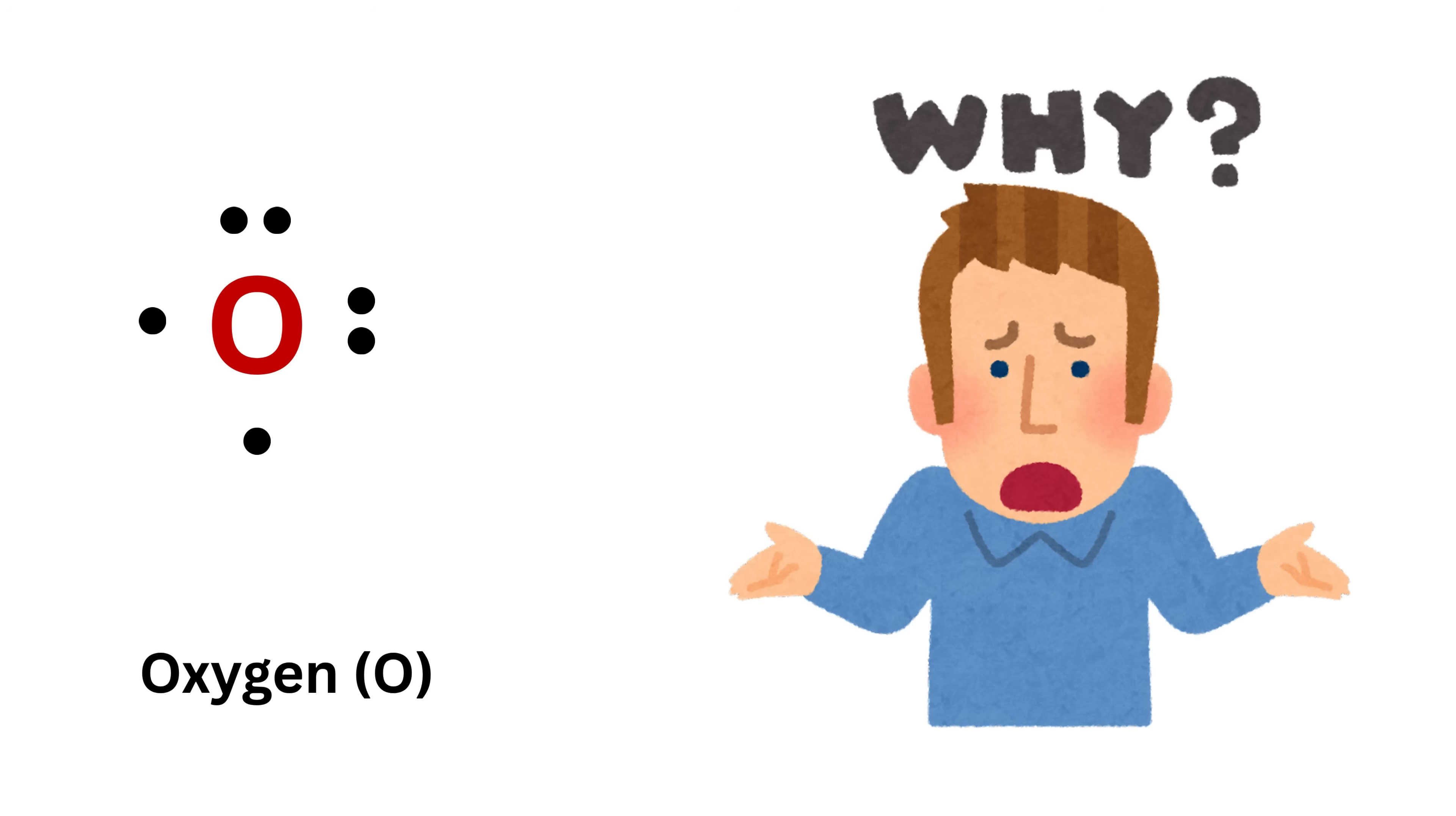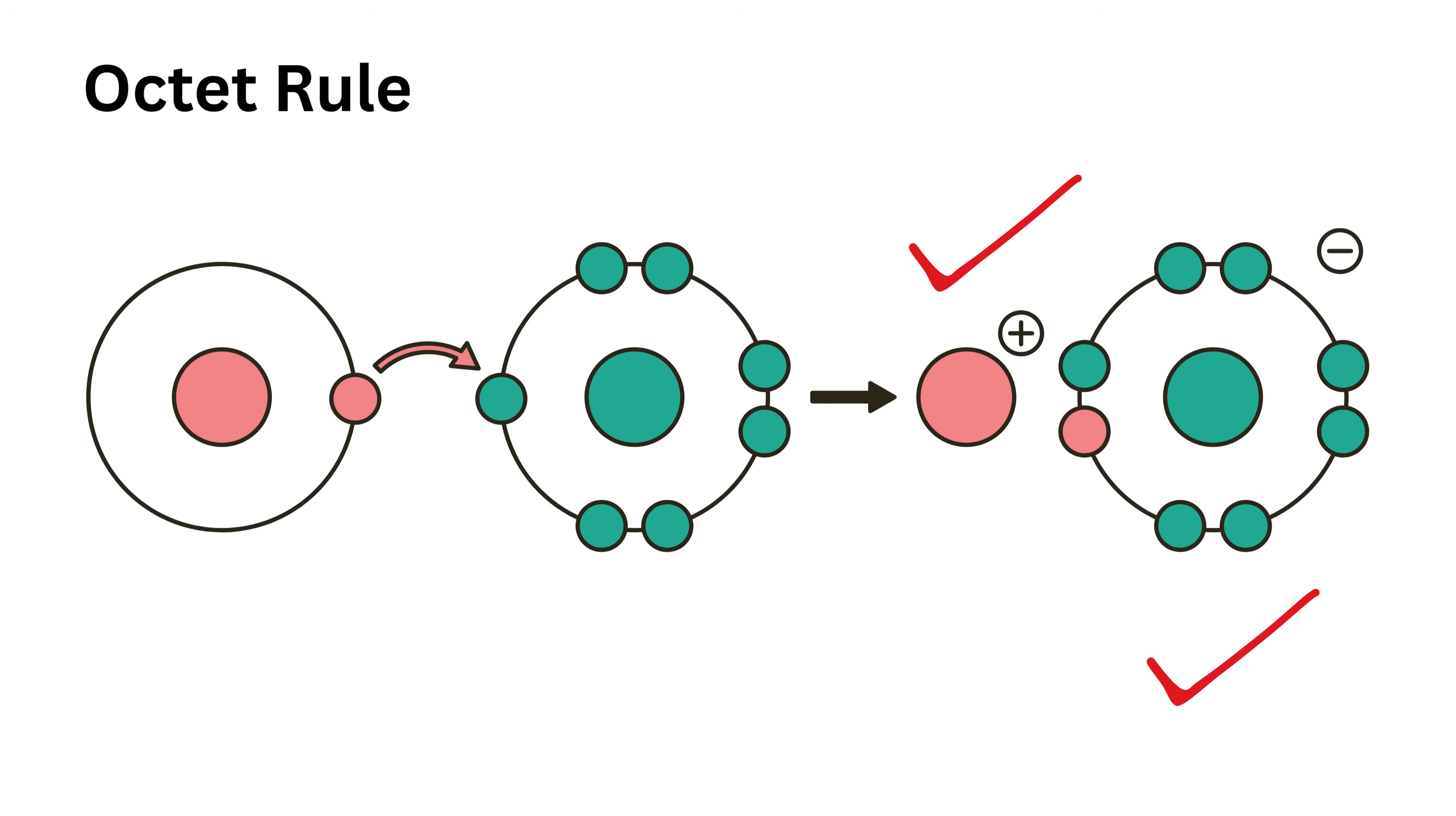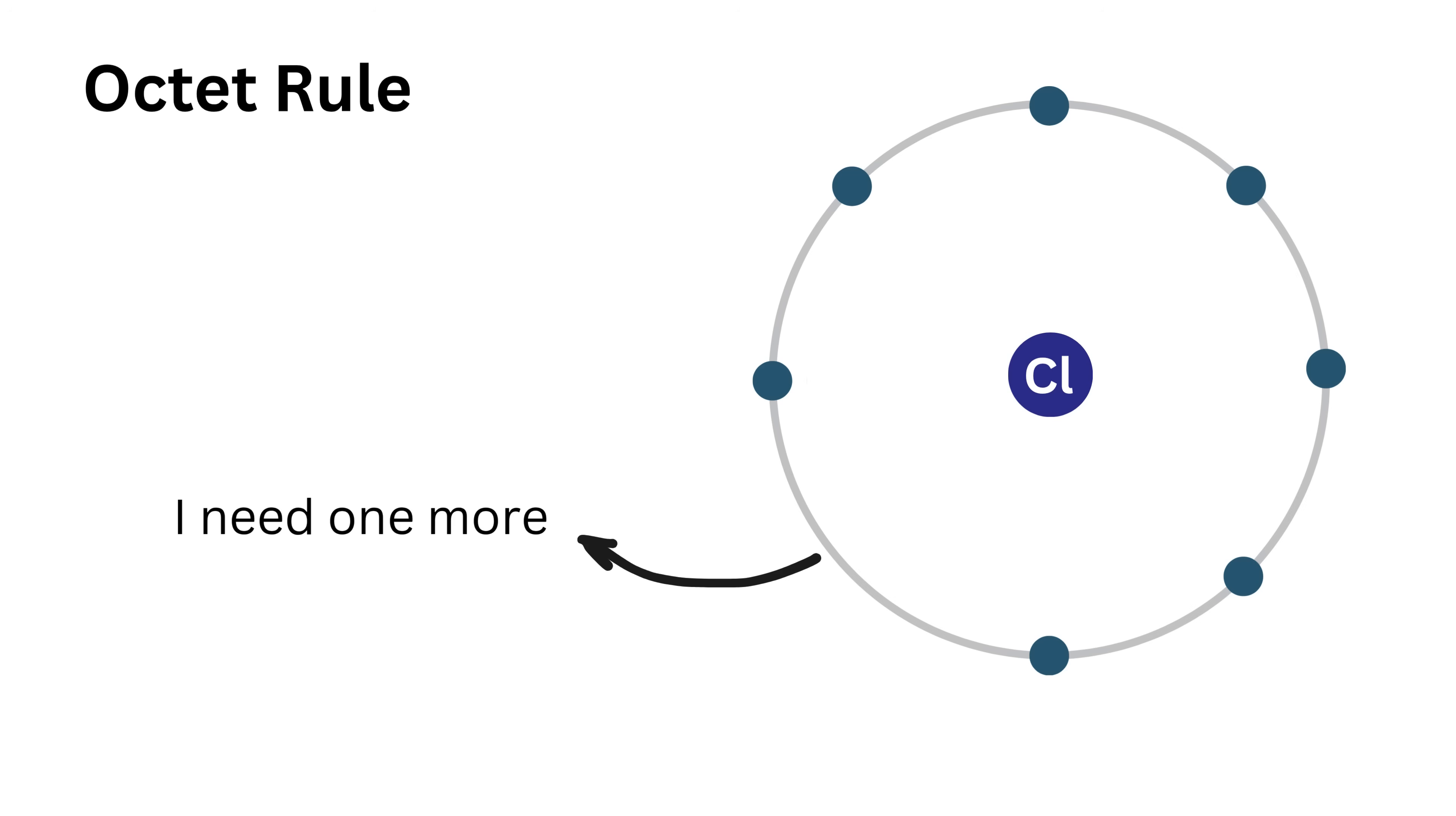Now you might be wondering, okay fine, I can draw dots, but why are we doing this? Well, these diagrams help us understand how atoms bond with each other. When atoms come close to each other, they either share, give, or take valence electrons so that everyone gets a full outer shell—something we call the octet rule. According to this rule, most atoms are happy when they have eight valence electrons. It's like the atom finally feels complete. The only exception is hydrogen, which wants only two, because that's all it can hold in its first shell. This drive to achieve a full outer shell is what causes bonding, and Lewis diagrams help us visualize that bonding clearly.